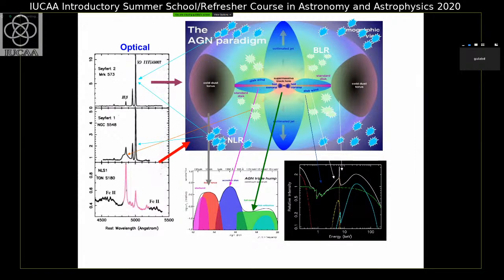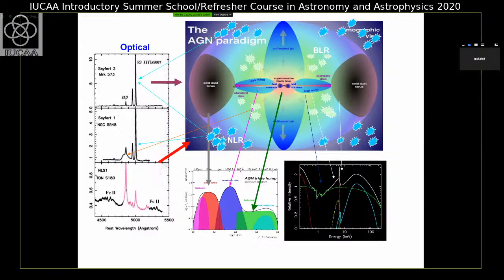Why do we see in some AGN only narrow emission lines, and in some AGN both broad and narrow emission lines? This is explained by the so-called unification scheme. In type 2 AGN, where we only see narrow emission lines in H-beta, oxygen-III, etc., our line of sight passes through the cold dusty torus. Therefore, the emission from the central region — both the X-ray emission and the optical-ultraviolet emission — must pass through the cold torus and is highly scattered and absorbed. The broad line clouds are within this region, very close to the accretion disk, so the broad emission lines are also blocked by the dusty torus.